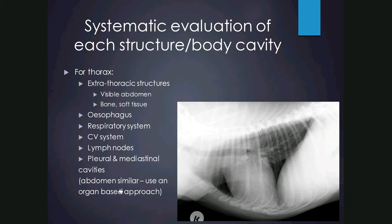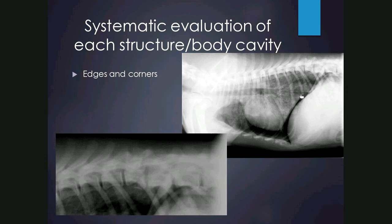For the abdomen, use a similar organ-based approach — look specifically for the spleen, kidneys, liver, and so on, ensuring every organ is normal. It's also important to look at edges and corners. For example, this radiograph shows an obvious pneumothorax and lung contusion, but if you miss evaluating extra-thoracic structures you'll miss the fracture of the vertebral body, which has a greater impact on patient prognosis than the pneumothorax or the lung contusion.